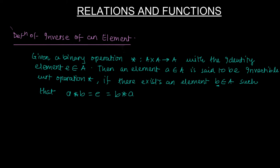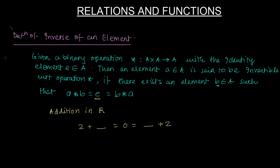Let's try to understand this with respect to algebraic addition. For addition in ℝ, the set of real numbers, pick up the number 2. What do we add to it so that it gives the identity element? The identity element with respect to addition is 0.